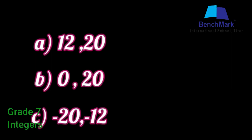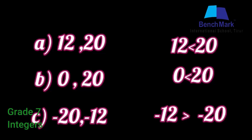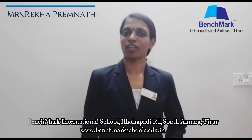Look at each pair of integers and compare them. Since both are positive integers in the first example, we can write the answer as 12 less than 20. Let's take the next example: 0 and 20. As you know, all positive integers are greater than 0, so the answer will be 0 less than 20. For the next example, negative 20 and negative 12. As we know, the value decreases to the left of 0, so the answer is negative 20 less than negative 12. Practice the exercise questions and the remaining part of the lesson will be discussed in the next class.